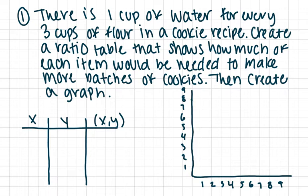In this problem it says that there is one cup of water for every three cups of flour in a cookie recipe. It wants us to create a ratio table that shows how much of each item would be needed to make more batches of cookies. Then we're going to take that ratio table and put it in a graph. First, let's identify our rate. Our rate is one cup of water for every three cups of flour.